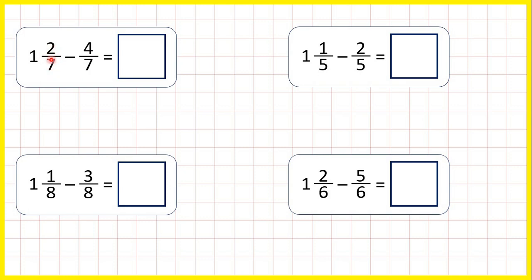If we only have two-sevenths, we can't take four-sevenths away, so what we need to do is change our mixed number to an improper fraction.